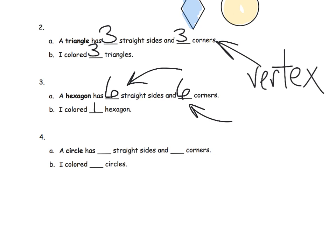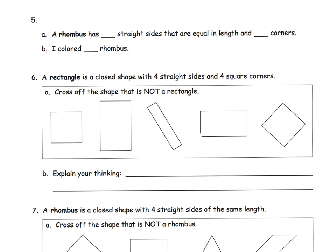And of course we also want them to recognize that they only colored in one hexagon. And then a circle has zero straight sides and zero corners, and we colored in two circles.